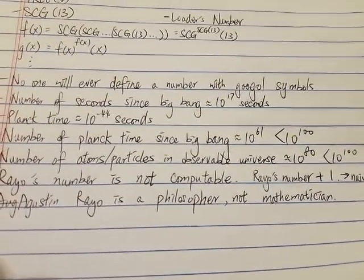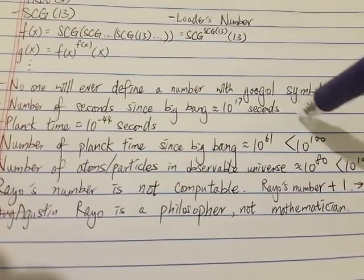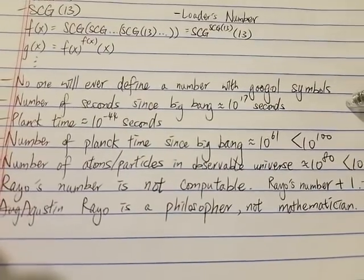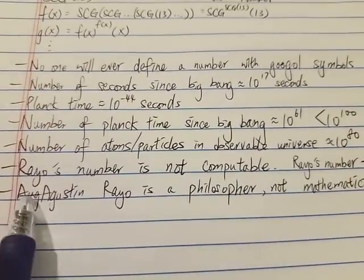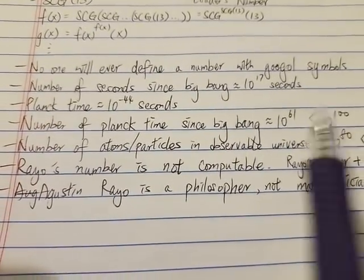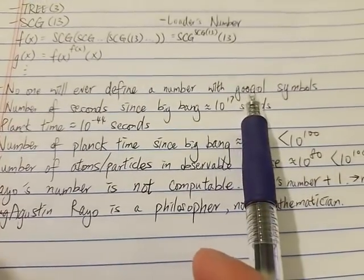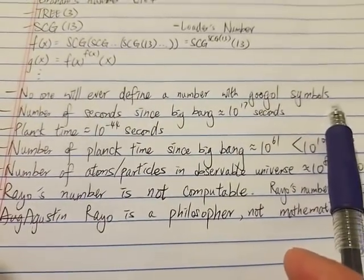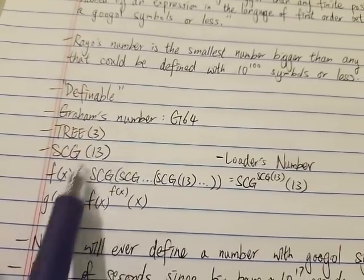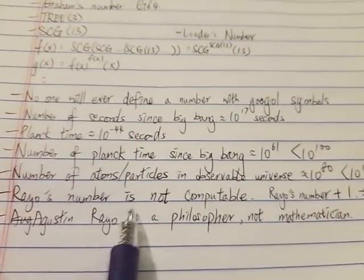And also, there's not enough digital storage for any person or a computer to store a googol symbols. Rayo's number is not computable because there's not enough storage space for any computer program to contain a googol symbols. And so all these numbers here, they are computable even though this number is computable, but Rayo's number is not.